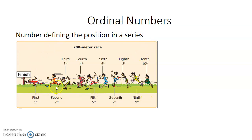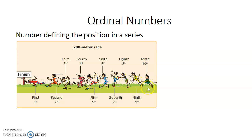So a series — a set of group of people who have taken part in a 200 meter race. The finish position: first. This person is second, third, fourth, fifth, sixth, seventh, eighth, ninth and tenth.